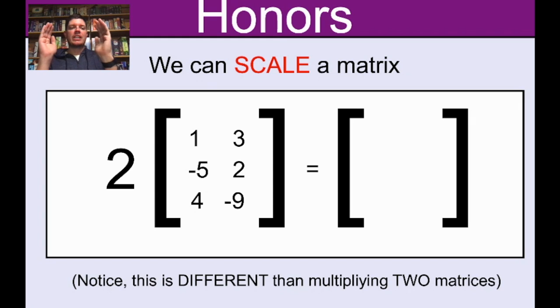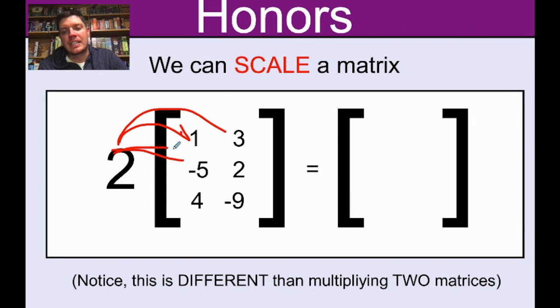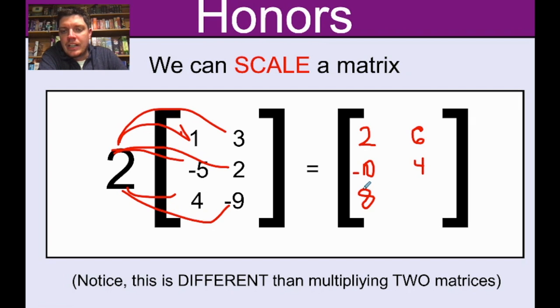If we look here at our first example, when you scale it's kind of like distributing. If you have something outside of the parentheses, you would distribute that in. Same idea here. If I have a matrix, we've got a matrix here in the middle, it's a three by two matrix. Scaling it means that I'm going to take the number in front of it and essentially distribute it to all of these numbers inside. We're going to multiply all of these numbers inside, thereby making the elements twice as big. I'm not making the matrix twice as big because that would mean the shape is changing, but the elements inside are going to be twice as big. So we're going to have a 2 here, a 6 here, negative 10 here, a 4 here, an 8 here, and a negative 18 here. So I just scaled that matrix by a factor of 2.